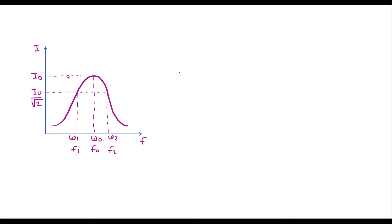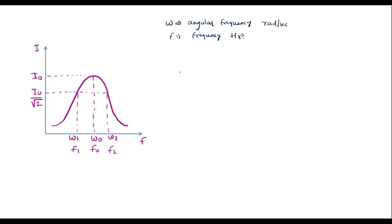We know that in a series RLC circuit, the plot of current versus frequency looks like this. Here, omega is known as angular frequency, measured in radians per second, and F is frequency, measured in hertz. We can consider either angular frequency or frequency. Omega 0 is the frequency when the circuit is at resonance, so omega 0 or F0 is known as the resonant frequency.